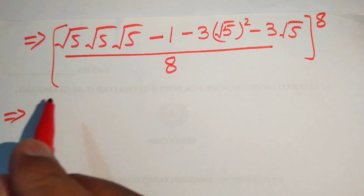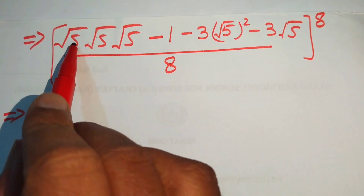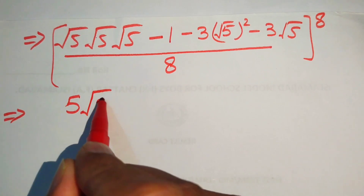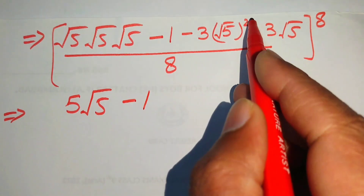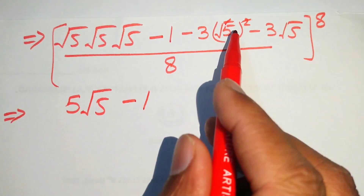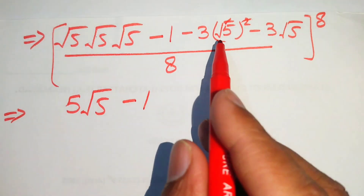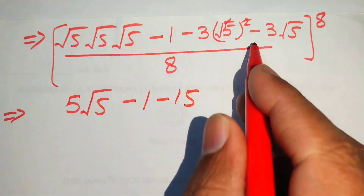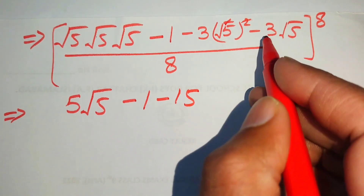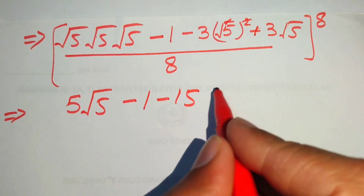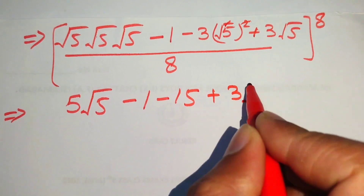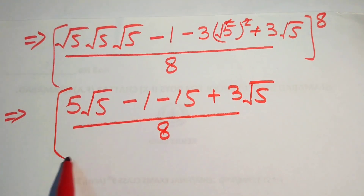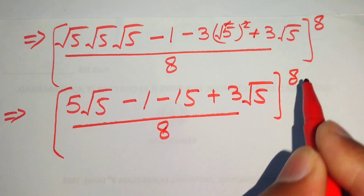We need more simplification. Multiplying √5 × √5 gives 5, so we have 5√5 minus 1. The term 3 times (√5)² gives 3 times 5 equals 15, so minus 15. And we have plus 3 times √5. All divided by 8, raised to the power of 8.